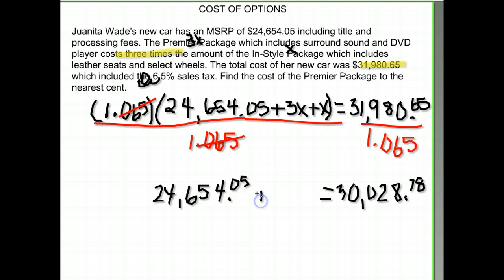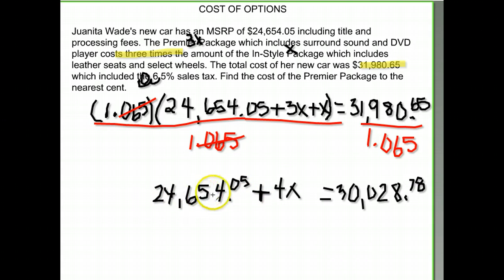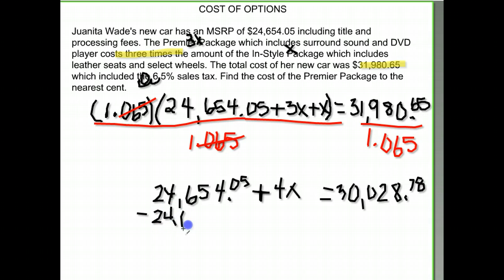I have the equation: twenty four thousand six hundred fifty four oh five plus four X equals thirty thousand twenty eight seventy eight. To solve, I need to get X by itself. Since twenty four thousand six hundred fifty four oh five is added to it, I need to subtract that — move everything that's with X to the other side.